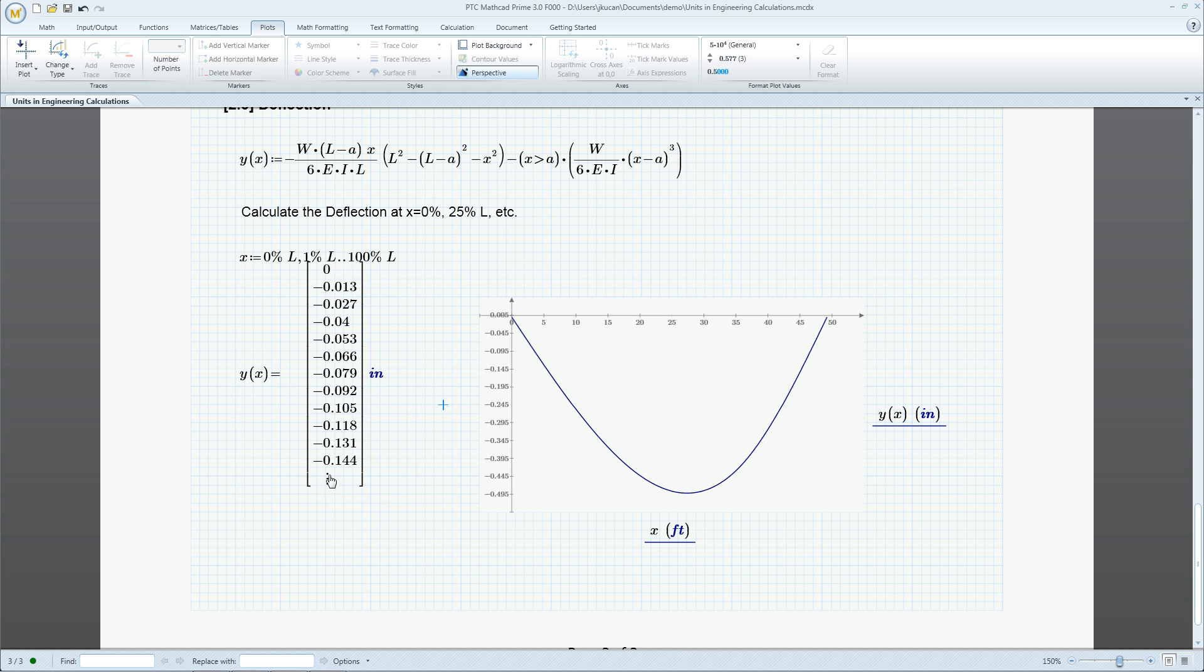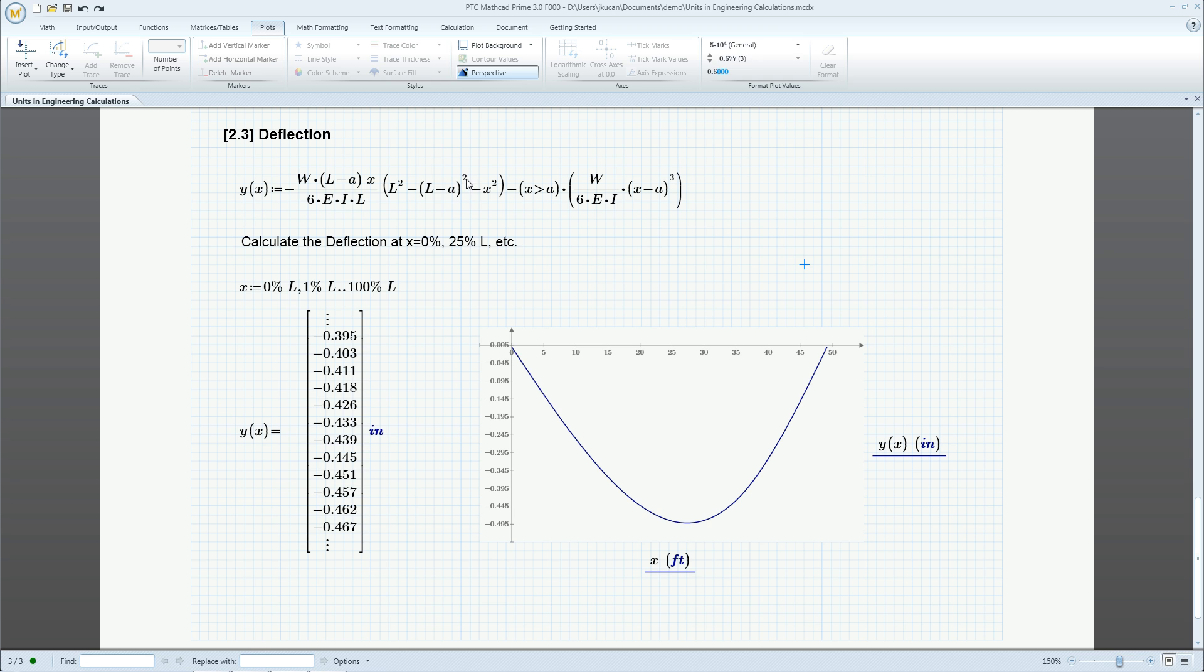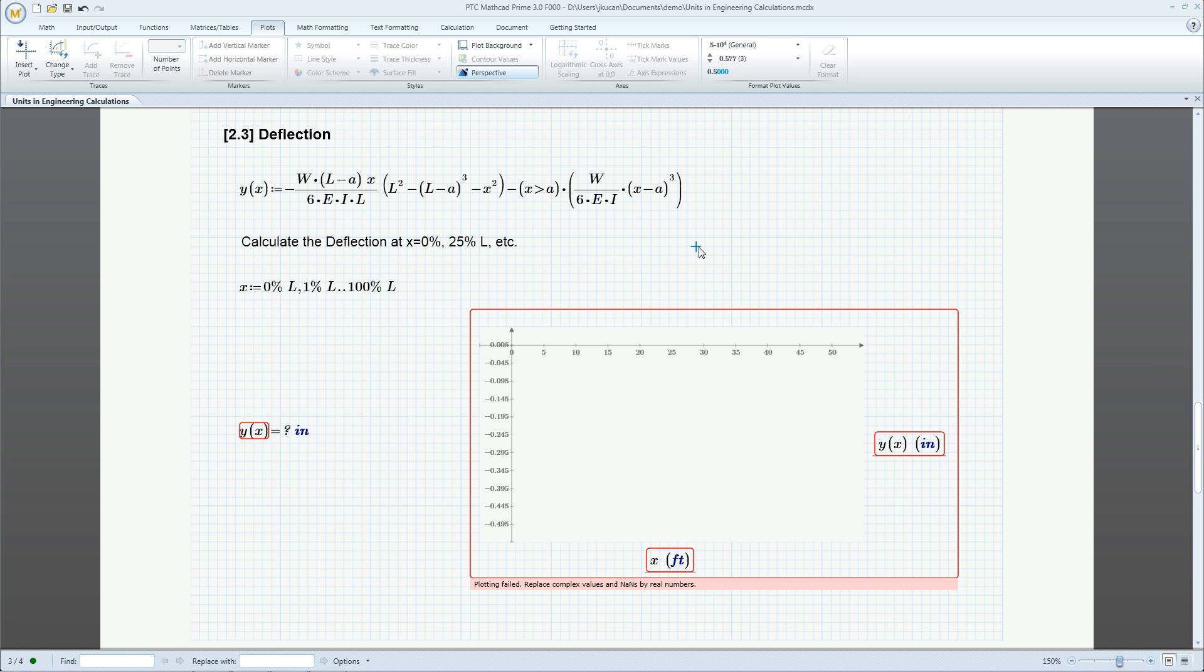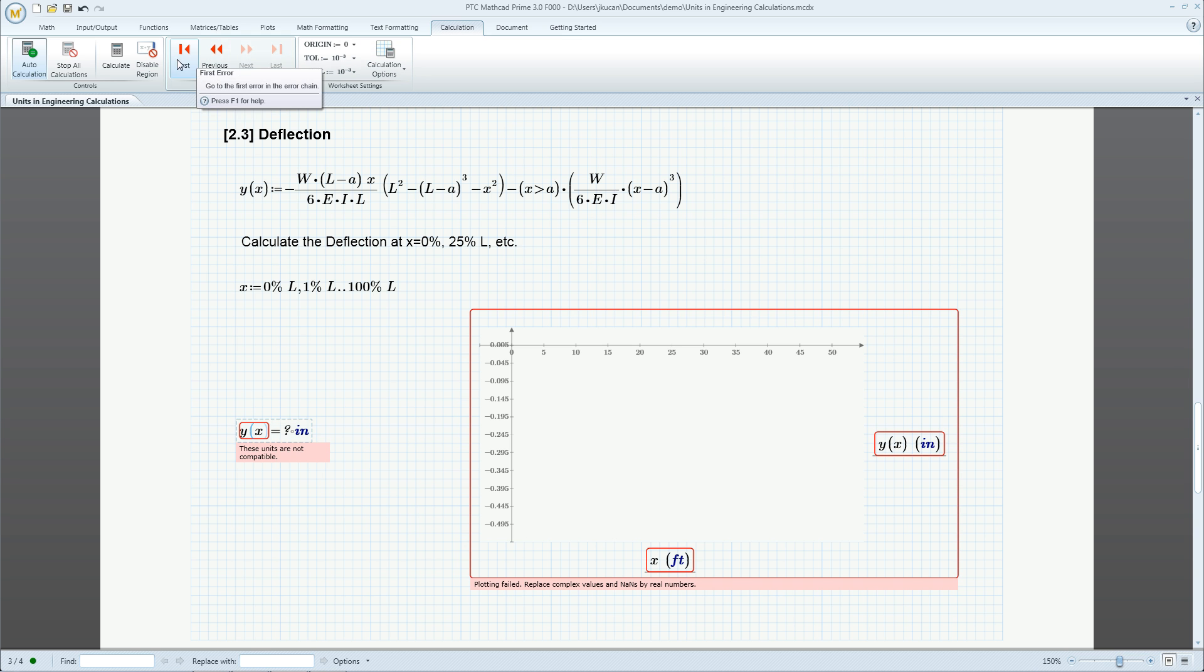PTC MathCAD Units Intelligence also checks for errors. Instead of squaring a term, if it is mistakenly cubed, error flags immediately show the problem. You can trace that error to the source, which points out the faulty term.